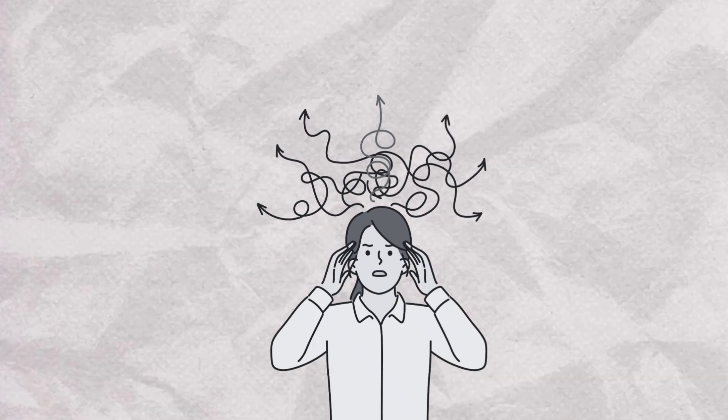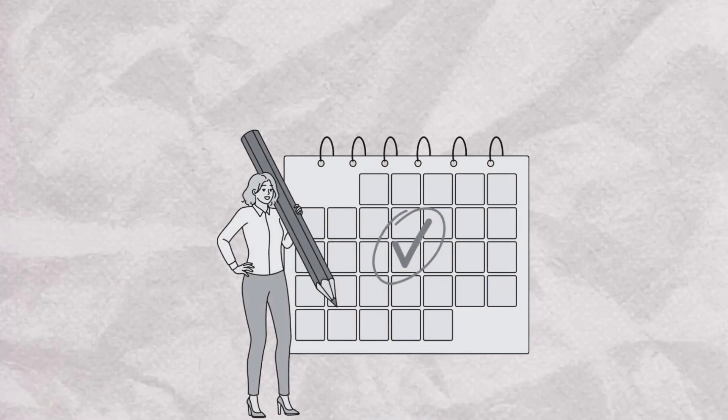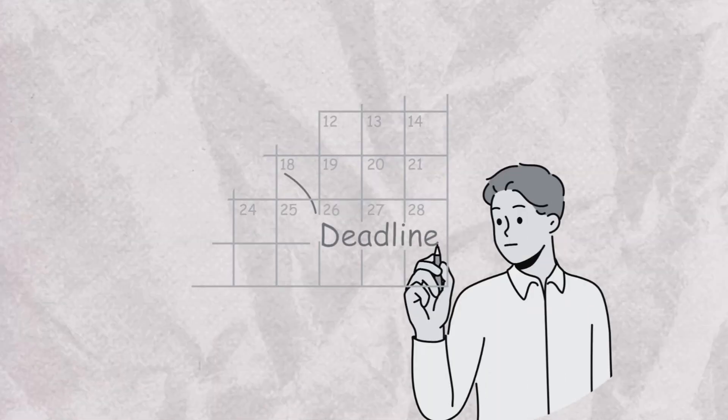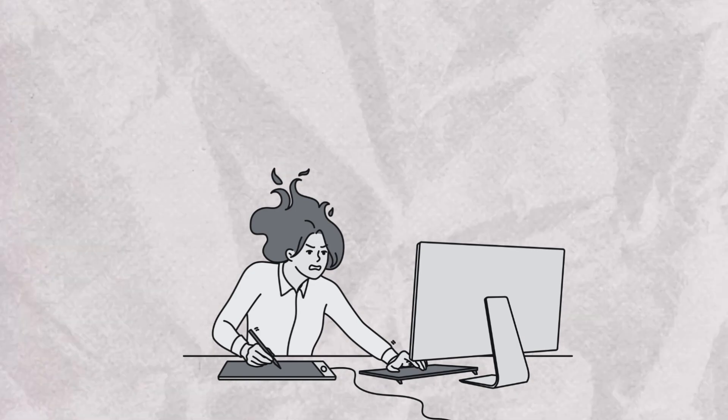This lingering awareness can create a mental itch, prompting individuals to return to the unfinished tasks to achieve a sense of completion. For instance, if you start a project and get interrupted before finishing, the project will often occupy your thoughts more persistently until it's completed, driving you to cross it off of your list.